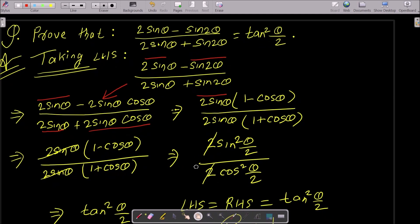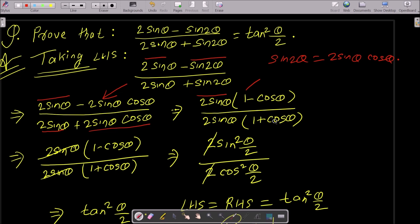This is the simplest way to prove this. First, take the LHS. Use the sin2θ formula — sin2θ = 2sinθ·cosθ. Then take 2sinθ as the common factor; in the numerator you get 1 - cosθ, and in the denominator you get 1 + cosθ.